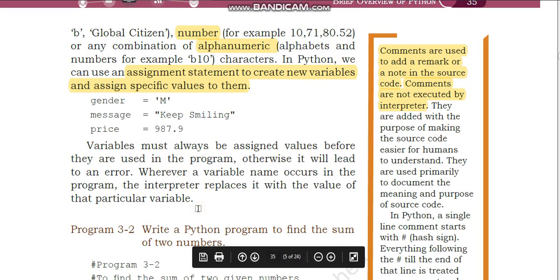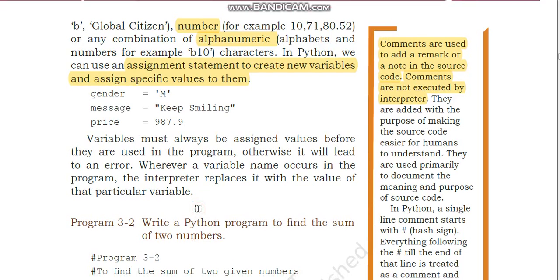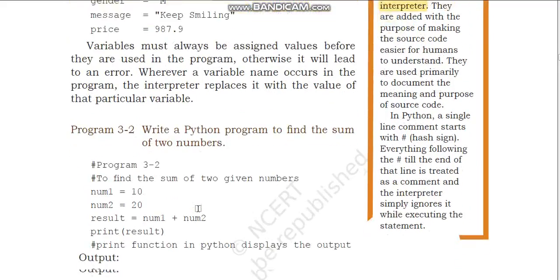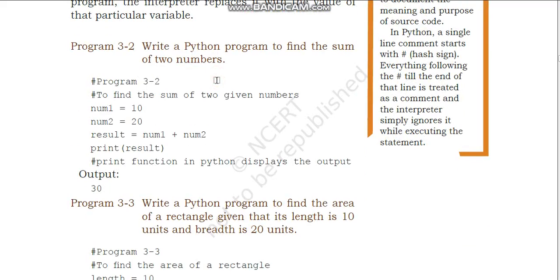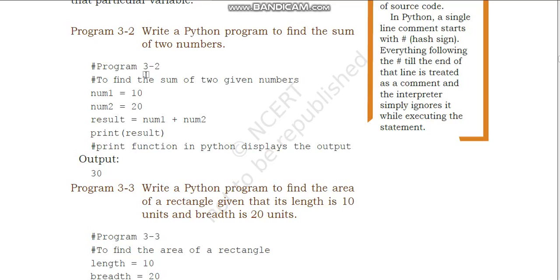Variables must always be assigned values before they are used in the program. Now let us see a simple program: write a Python program to find the sum of two numbers.